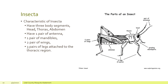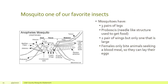The characteristics of all Insecta are they have three body segments: a head, a thoracic region, and an abdomen. They have one pair of antennae, one pair of mandibles or jaw parts, and two pairs of wings — sometimes you don't see both sets because some are very small or hidden underneath another set of wings, as with the grasshopper. And they have three pairs of legs, all attached to the thoracic region.